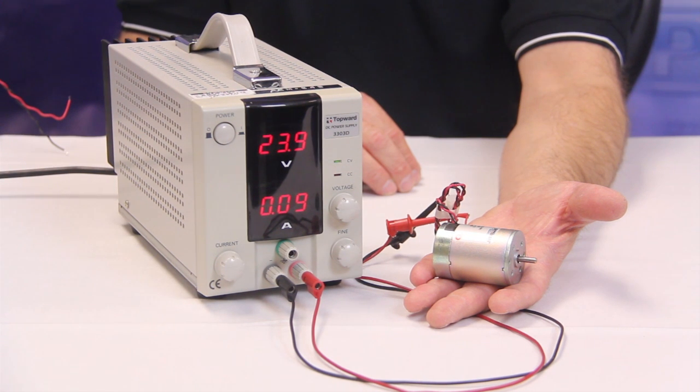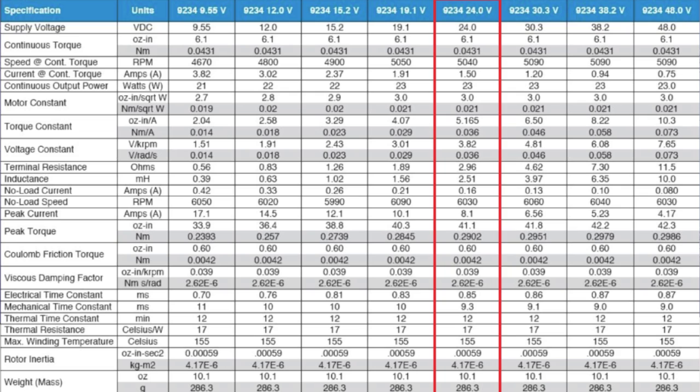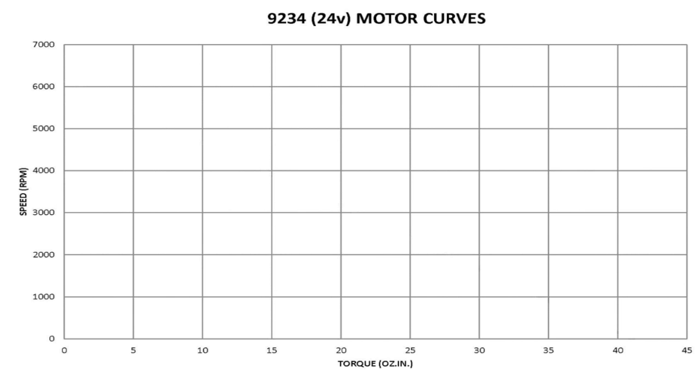A Pittman DC motor's performance is characterized by the torque it can produce at a given speed and the voltage and current required to accomplish it. I will be using a Pittman 9234 brush commutated motor as an example for this explanation. To create the curves, we start by drawing the axes.